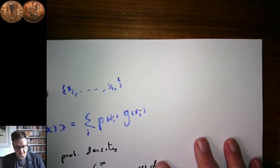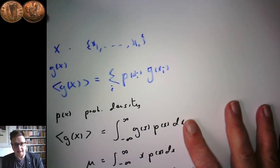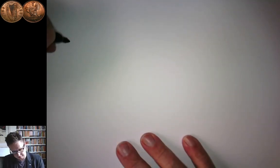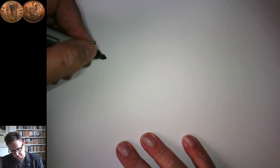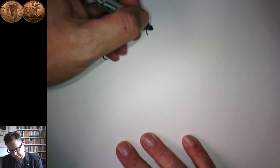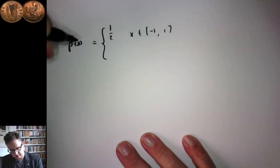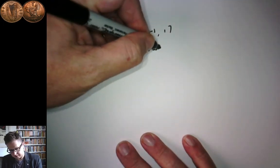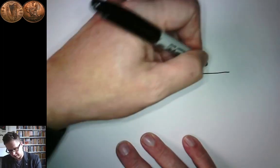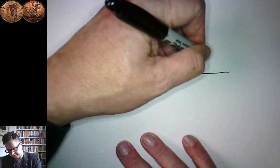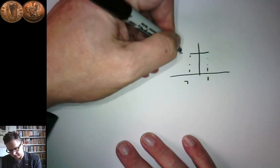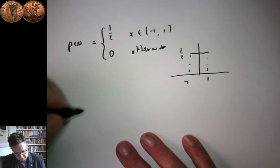Let's do a quick example. We previously had an example distribution, which was the constant distribution. We had p(x) equal to one half for x in minus one to one, and equal to zero otherwise. This is the function that looks basically like a rectangle — with one at the right, minus one at the left, and a half as the height. So that's our probability density. What's mu?